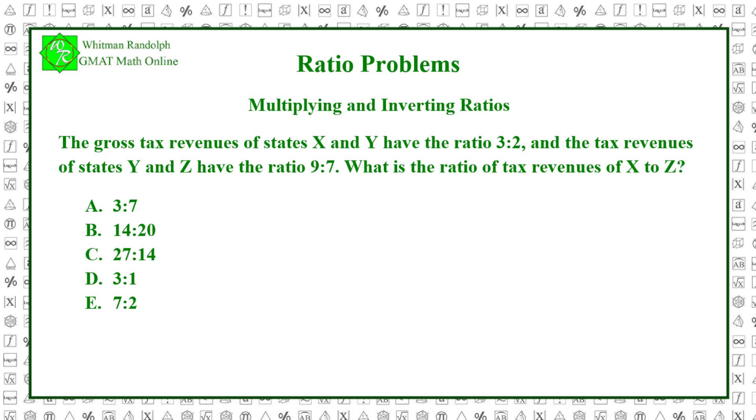The two ratios we're talking about here can be expressed as fractions. X over Y equals 3 over 2. And Y over Z equals 9 over 7. Therefore, if we want X over Z, we simply multiply the two fractions. X over Y times Y over Z equals X over Z.